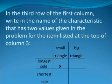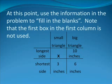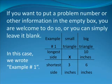In the third row of the first column, write in the name of the characteristic that has two values given in the problem for the item listed at the top of column 3. At this point, use the information in the problem to fill in the blanks. Note that the first box in the first column is not used. If you want to put a problem number or other information there, such as your name, you are welcome to do so, or you can simply leave it blank.